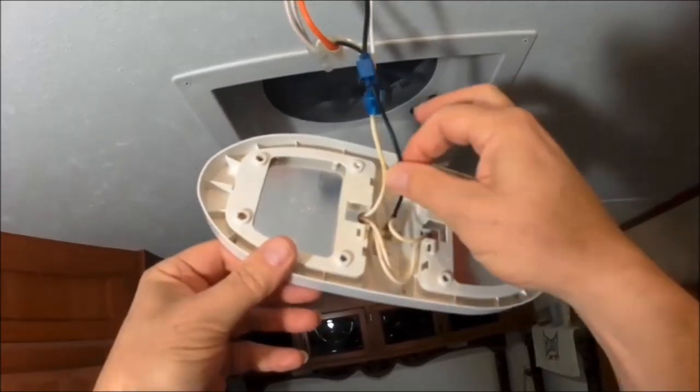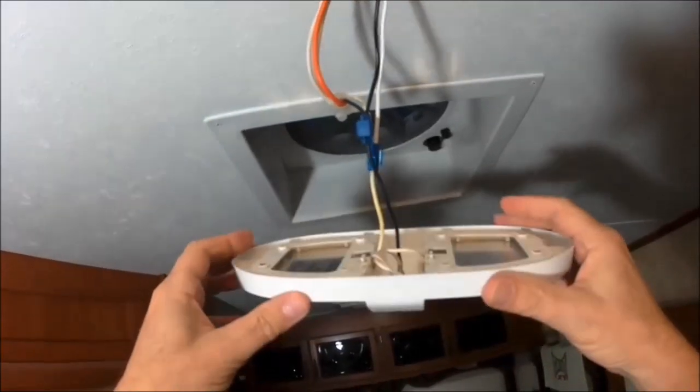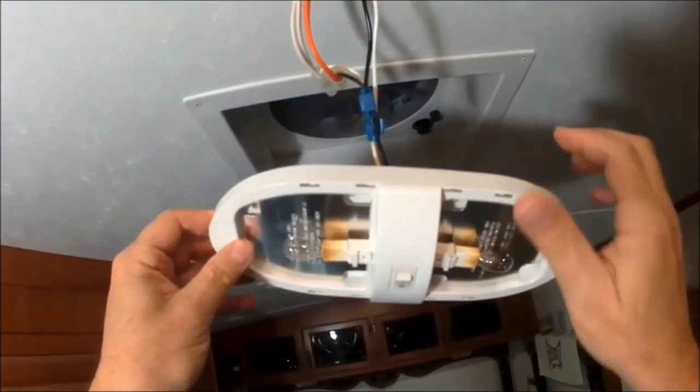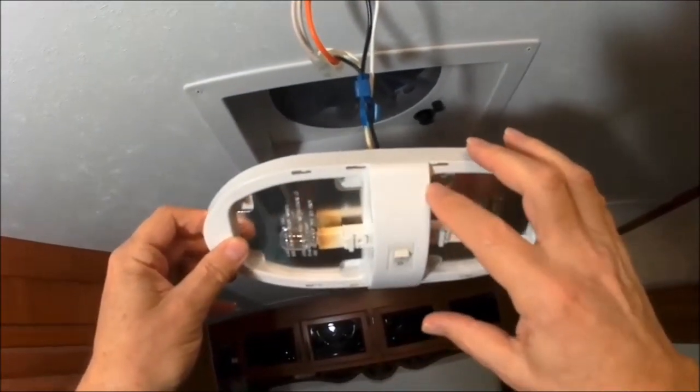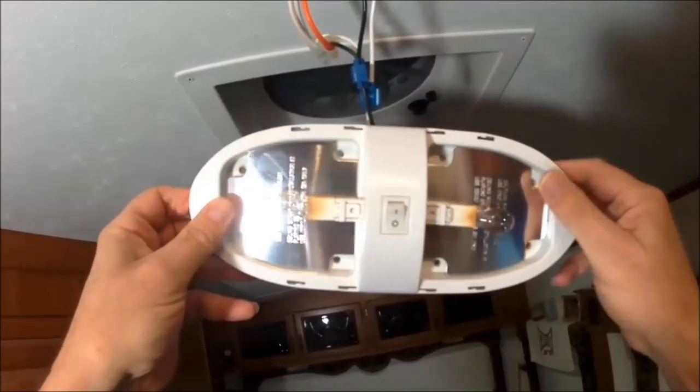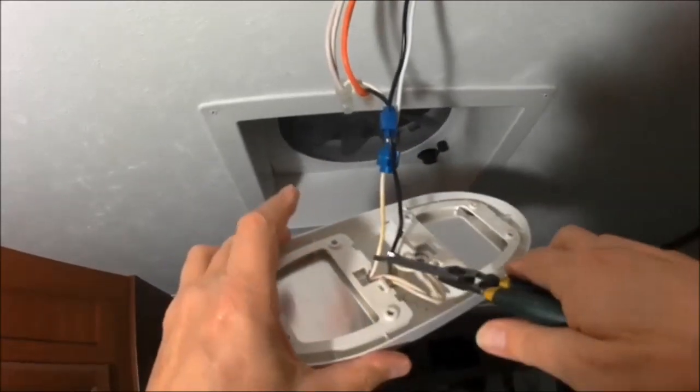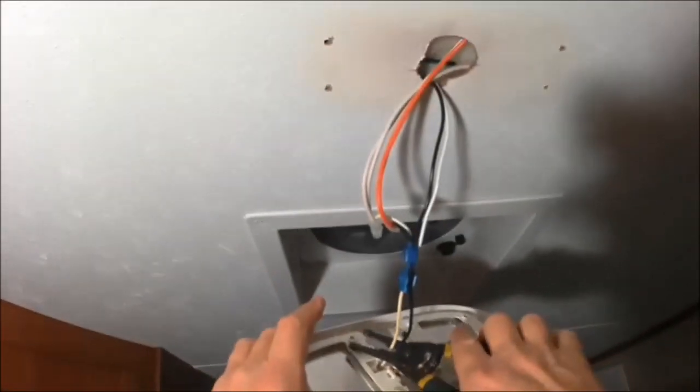Before you cut these wires to remove this fixture, make sure you turn off the main switch that controls these overhead lights—not the individual switches, but the main switch. Since you're going to throw this fixture away, cut this wire as close to the fixture as you can.